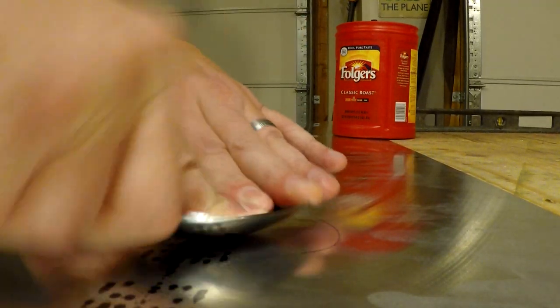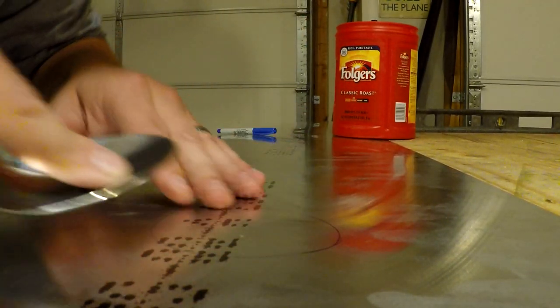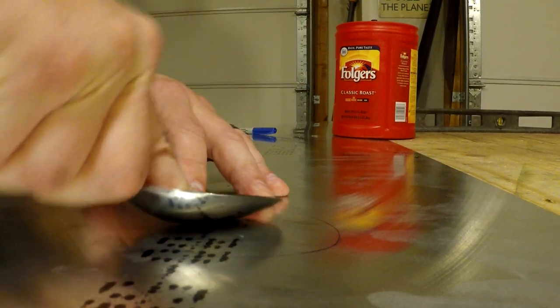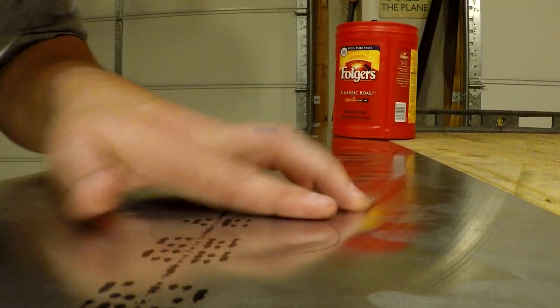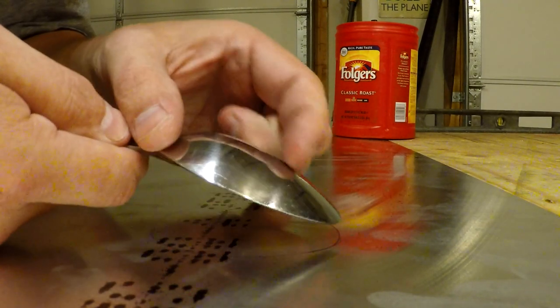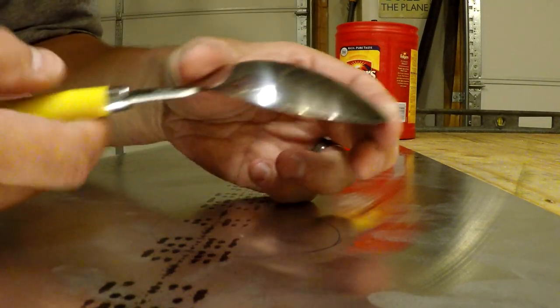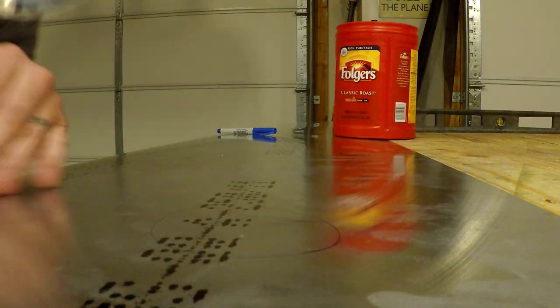And again a real automotive body dolly or spoon would be a little bit better for this, but I've gotten pretty darn good results. You just don't want to use something small like a teaspoon that's just too small and has a sharper curve. So this is actually a serving spoon and it works pretty well.